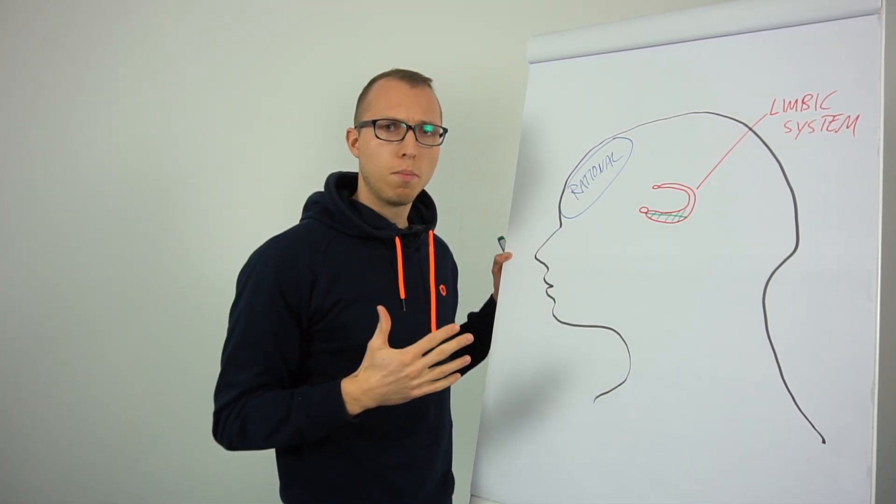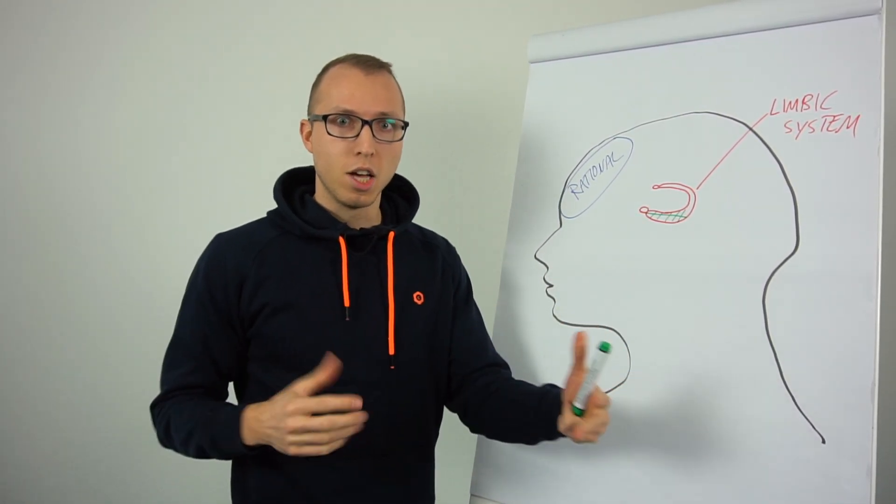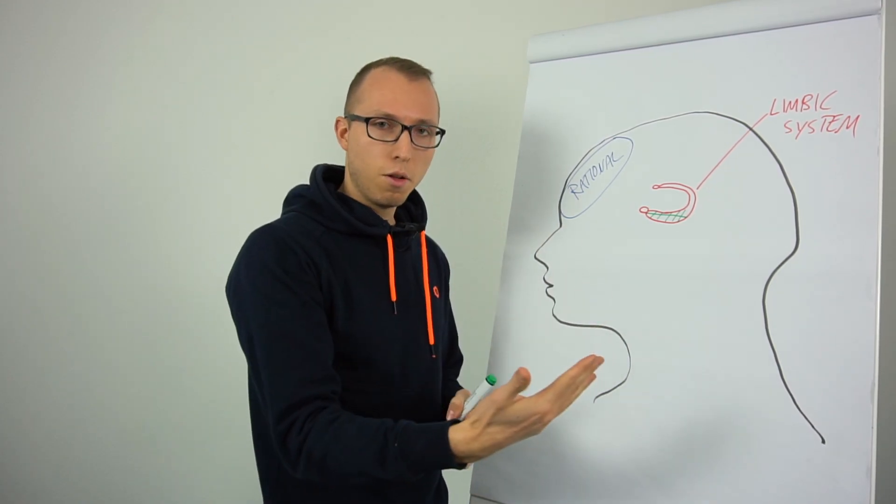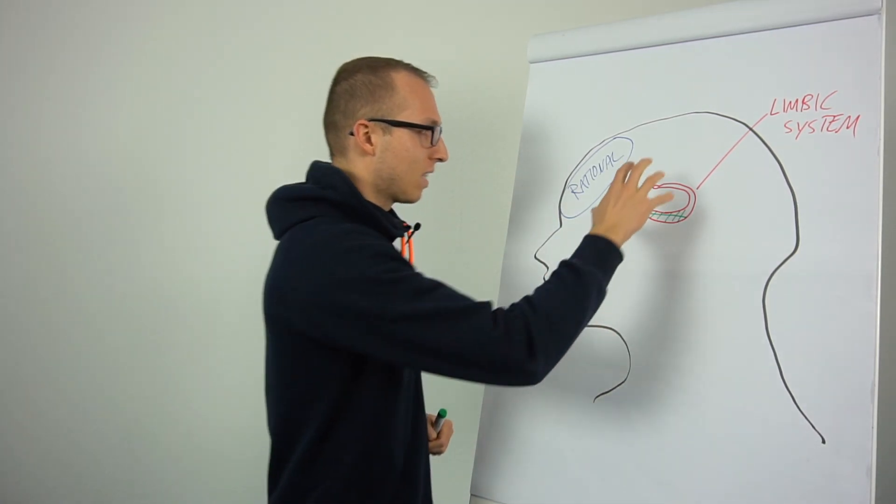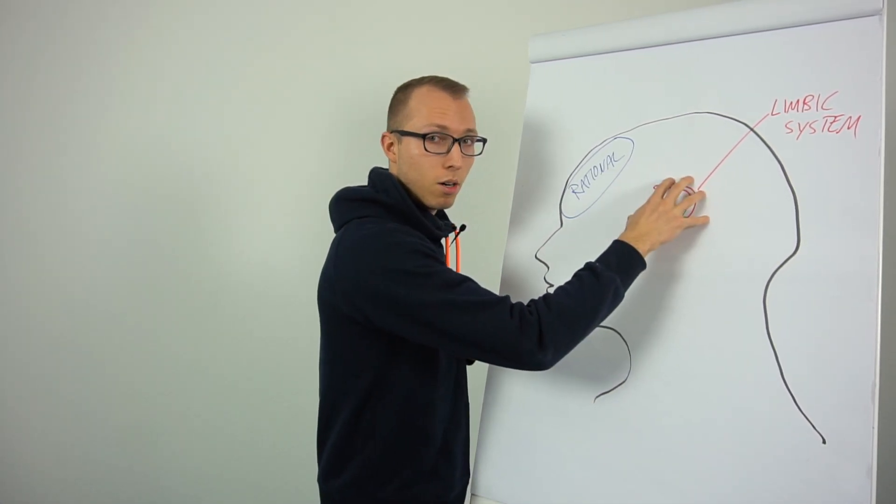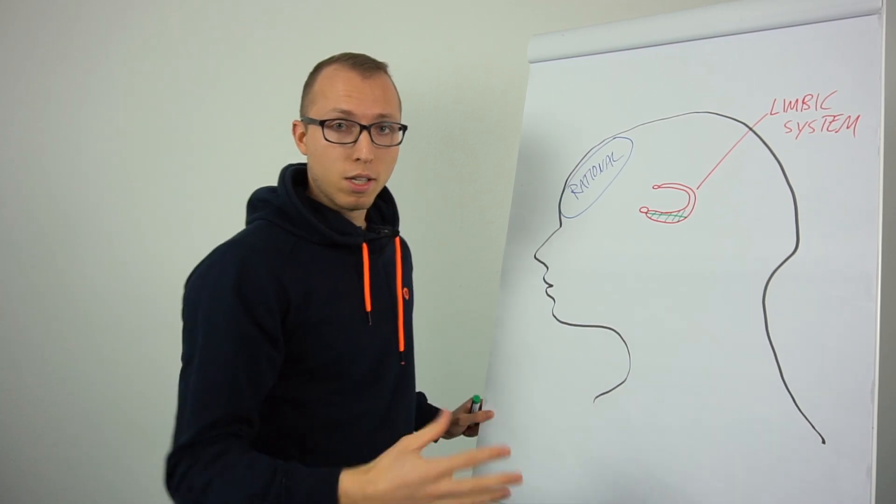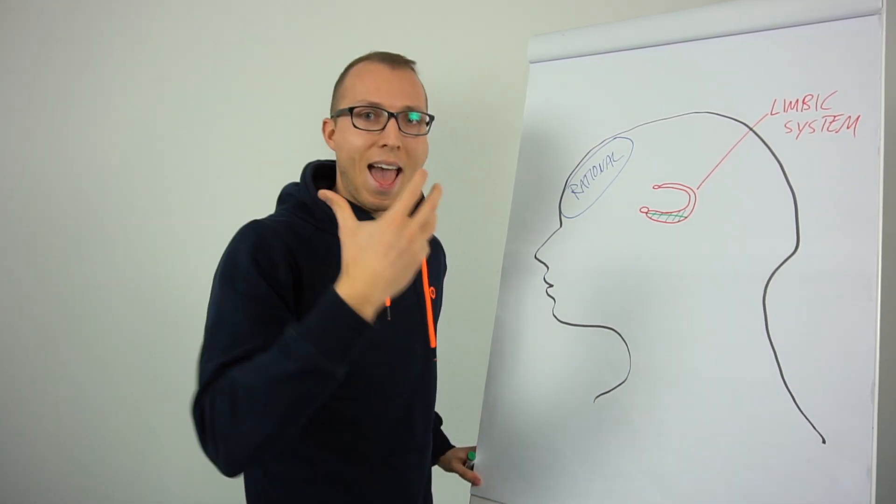It makes sense from an evolutionary perspective. Something is very great, you should remember it because you could do it again in the future. If something's very negative, you should remember it because you should avoid it in the future. And that's why we remember emotional things much better. So if you want people to remember things to learn, make it emotional, make it active.